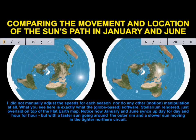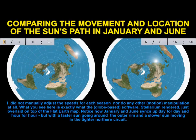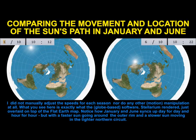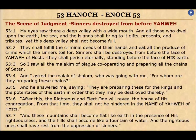And so I made that decision today. In looking and rereading other aspects and portions of the Book of Enoch, I was led to a couple of things I want to share in this video. One of them is chapter 53, verse 7, which says: 'And these mountains shall become flat, like earth, in the presence of his righteousness. And the hills shall become like a fountain of water. And the righteous ones shall have rest from the oppression of sinners.'